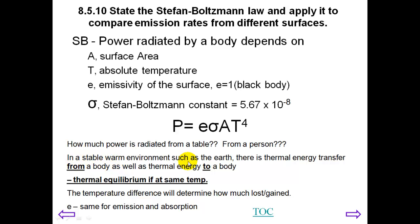So in a stable warm environment such as the Earth, there's thermal energy transfer from the body as well as to the body. And if it's at the same, these two at the same temperature, this transfer of radiation would be the same. So we have thermal equilibrium.